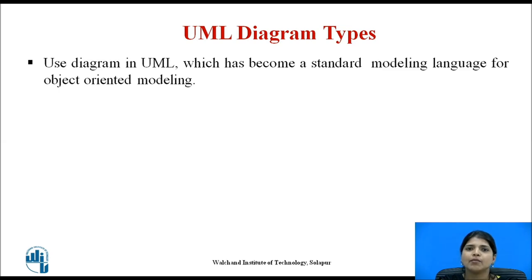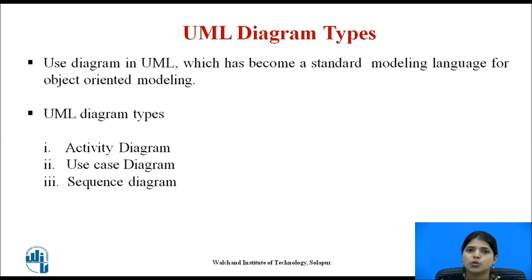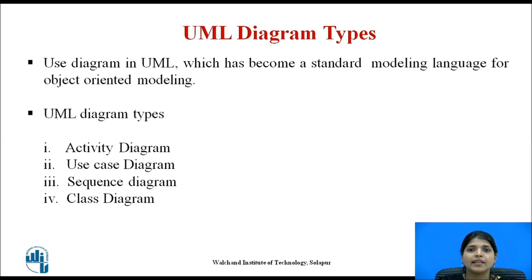Let us see UML diagrams and their types. UML stands for Unified Modeling Language — it is an object-oriented language for writing software blueprints. UML diagrams have five types. First is the activity diagram, which shows the activities involved in a process or data processing. Then, use case diagram, which shows the interactions between a system and its environment. Third, sequence diagram, which shows interactions between actors and the system and between system components. Then, class diagram, which shows the object classes in the system and the associations between these classes.